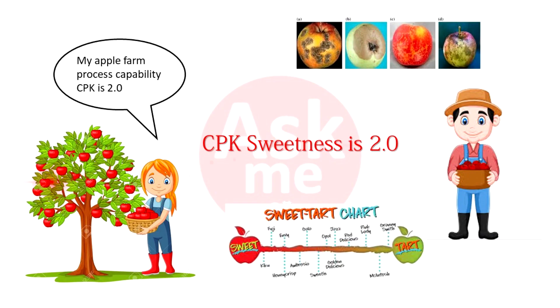A simple analogy: in an apple plantation, the sweetness of apples is being monitored. Sweetness may have a CPK of 2, but the overall yield or defect rate from the apple plantation may be poorer than the calculated value of 1 PPB, because other defects like size, skin defects, and rotting also contribute to the yield.